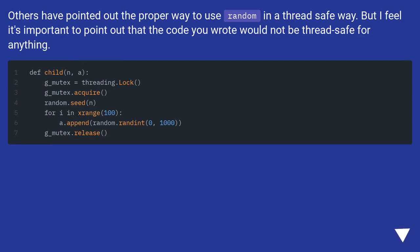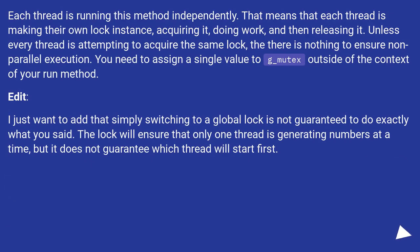Others have pointed out the proper way to use random in a thread-safe way, but it's important to point out that the code you wrote would not be thread-safe for anything. Each thread is running this method independently, meaning each thread is making their own lock instance, acquiring it, doing work, and then releasing it. Unless every thread is attempting to acquire the same lock, there is nothing to ensure non-parallel execution.